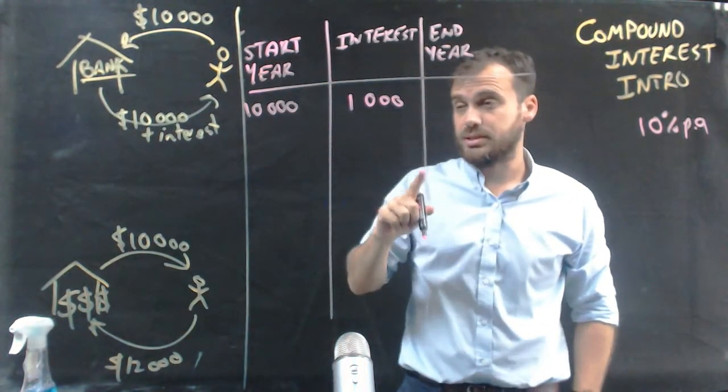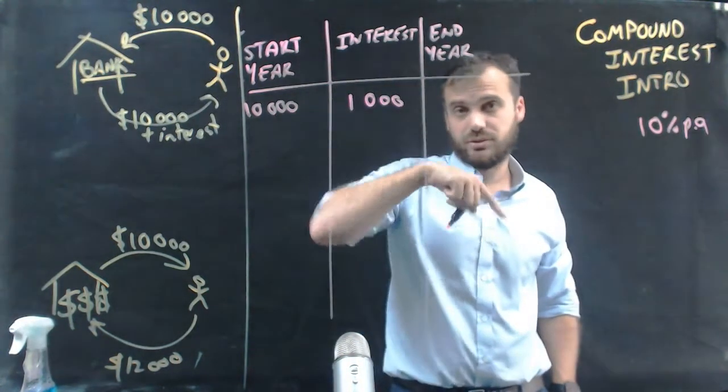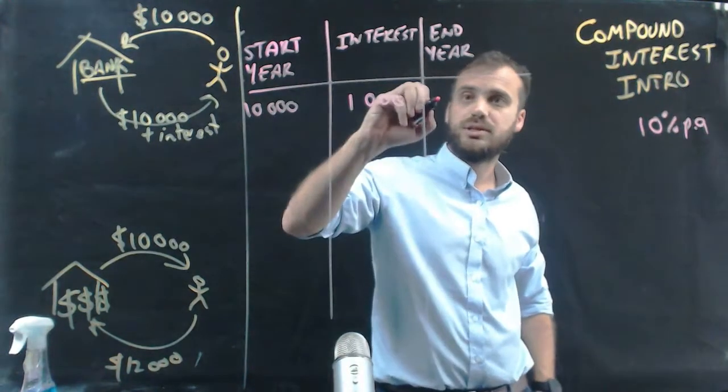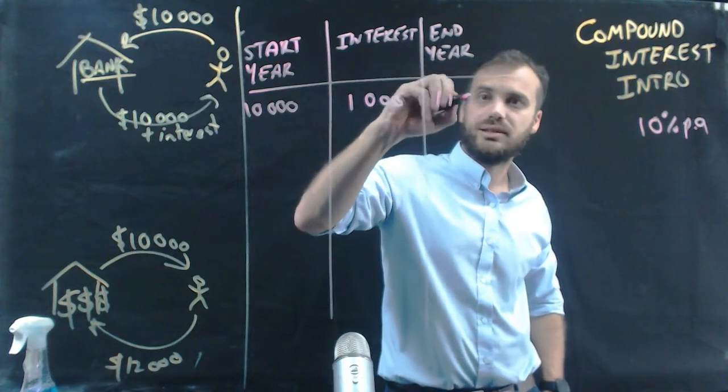So that means that if you put it in the bank on the 1st of January, by the end of the year, on the 31st of December, you can expect to have $10,000 plus $1,000, that's $11,000.